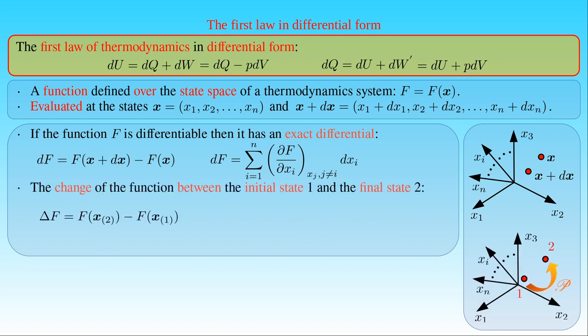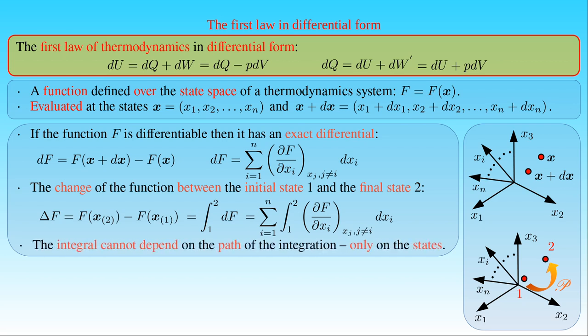If a thermodynamic system evolves from its initial state 1 to its final state 2, then we can determine the difference ΔF in the function F evaluated at the state vector X2 in its final state and at the state vector X1 in its initial state. We can also obtain this difference by integrating the differential of the function F along the path representing the thermodynamic process of the system in the state space. If we substitute the exact differential of the function F into the path integral, then the difference ΔF can be written as the sum of the integrals of the partial derivatives of the function F with respect to the state variables over the same state variables from state 1 to state 2. Since the difference in the function F depends only on the initial and the final states of the system, the integral can only depend on these states and cannot depend on the path of the integration. If we choose another path connecting the states 1 and 2, the difference ΔF in the state function F still is the same as the one obtained in the original process. Since the function F is an arbitrary state function, these findings also hold for the internal energy of a thermodynamic system.